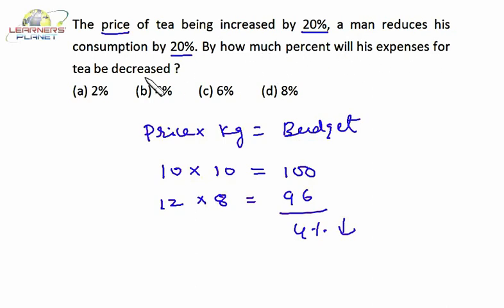There is a 4 percent downfall in expenses. So his expenses on tea will be decreased by 4 percent. I hope you are clear.